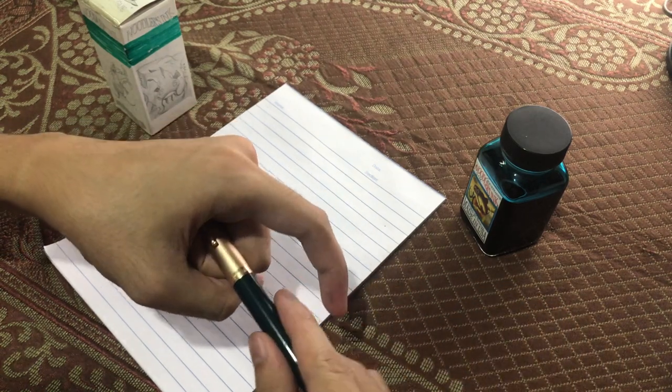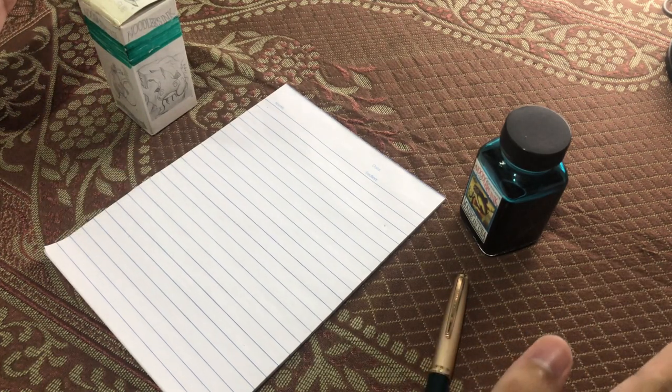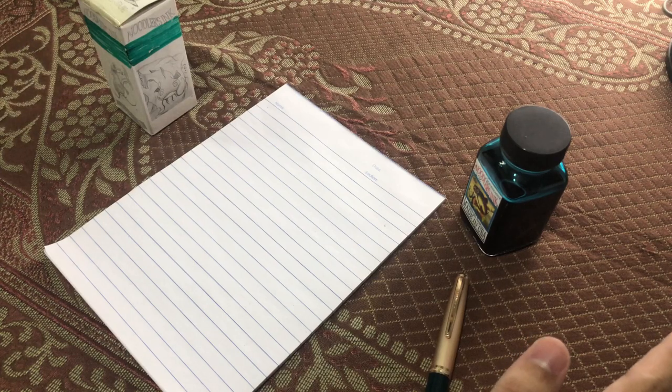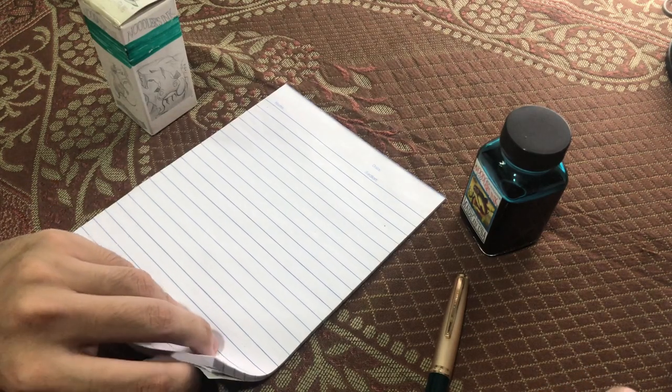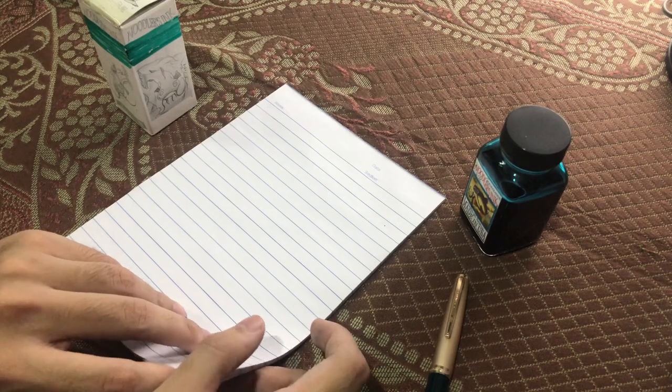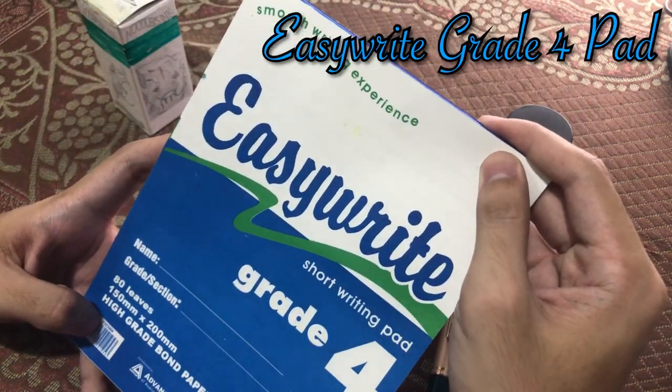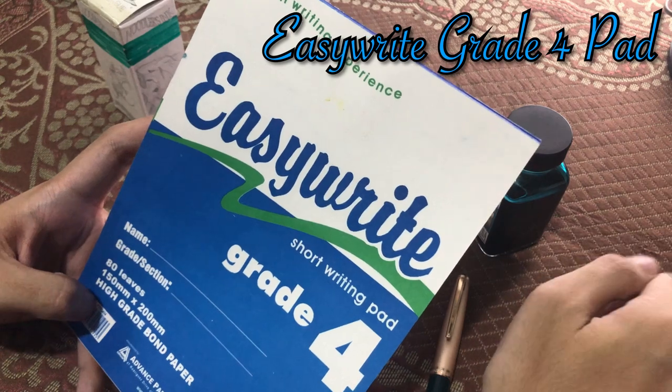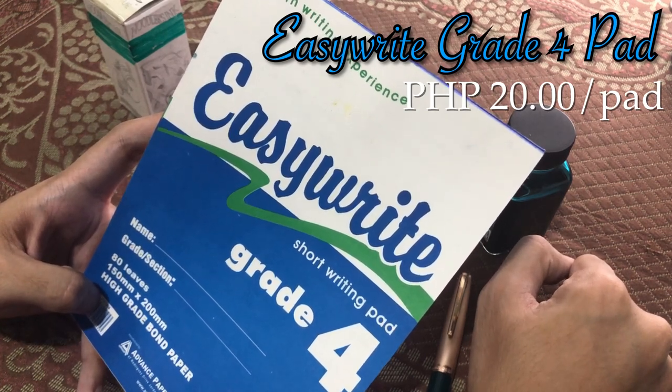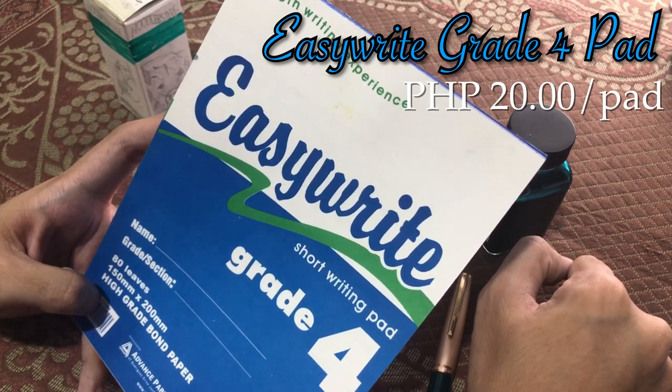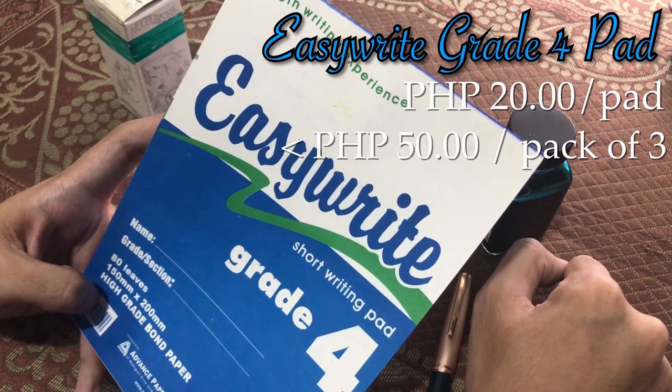Since we have now the ink and the pen, there should be the paper as well. We won't be using any Tomoe River or Rhodia paper because those are just way above our price point. The paper we're going to use is very abundant here in the Philippines and available at a very cheap price. It's the EasyWrite pad paper, available for 20 pesos in the local Sari Sari store. But you'll be able to get this at a cheaper price in the malls, available in packs of three for roughly around 50 pesos.